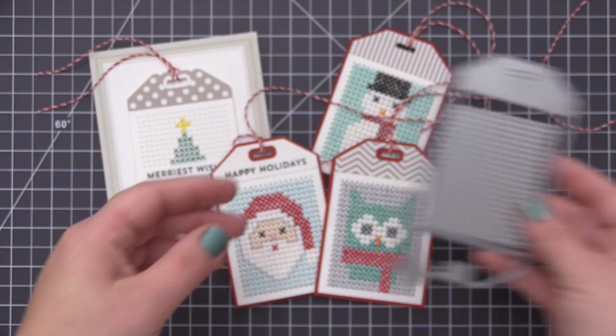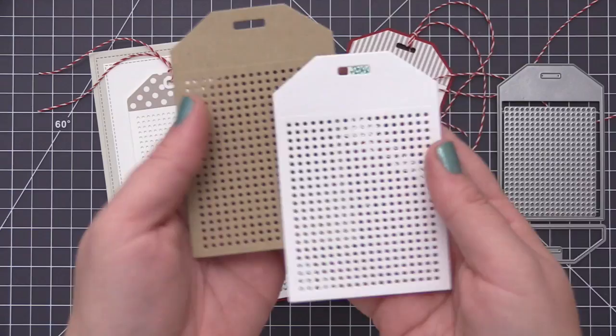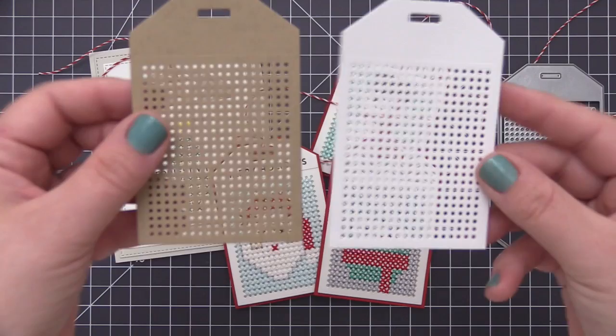I've cut the tag out of two pieces of cardstock - a white piece and a craft piece. The craft piece looks really nice when you do any kind of stitching with white or a solid color, just a really pretty effect. For the white, we're going to do some colored stitching.